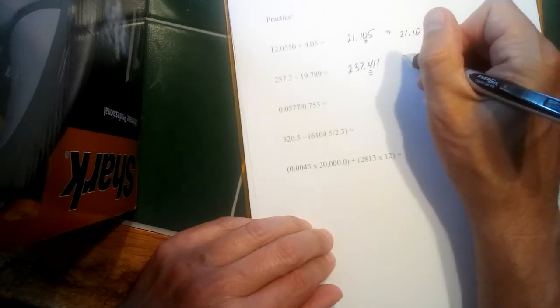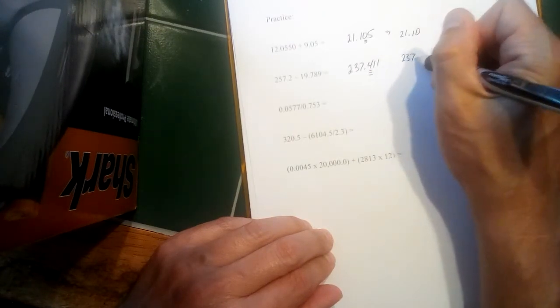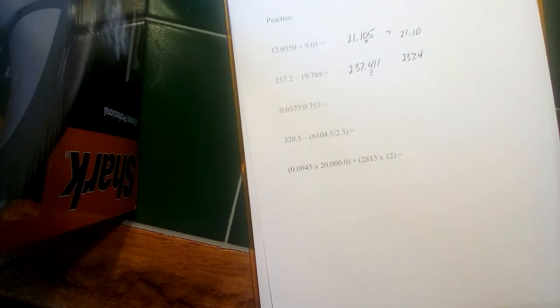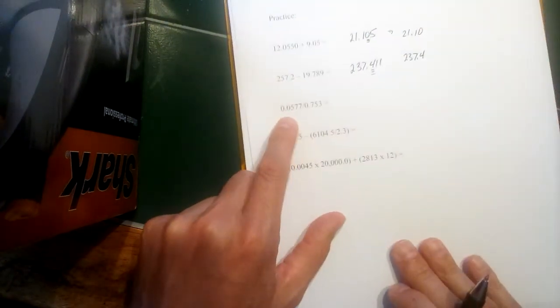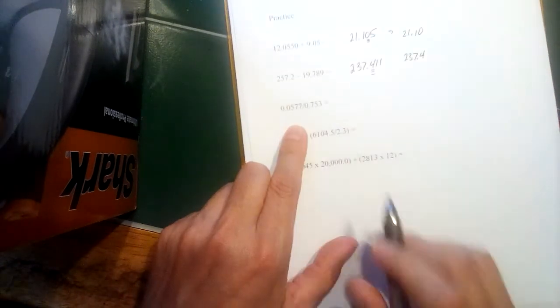We've got to stop there at the tenth place. So in this case, it's a little clearer. We just drop those hanging ones at the end of the number. The answer here should be 237.4. Next example is a division. So you've got your divide sign there.